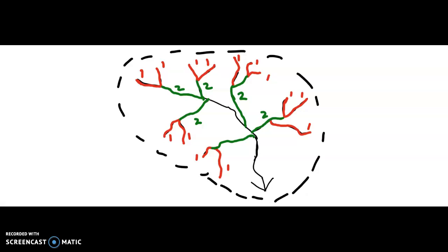Two stream orders merge to form a subsequently higher stream order. However, if two streams of different orders are merged, the resultant would be the higher of the two orders merged. For example, in the area circled in pink, we see a red merging with a green — but the green line is maintained all the way down, because credit is given to the highest order of the two.